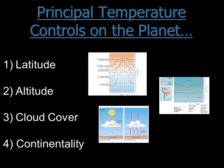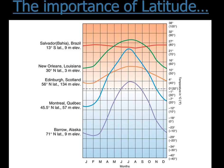So what controls the temperature on our planet? There are four things that determine it. Obviously temperature is determined by sunlight hitting the planet, but how that sunlight hits and what happens to it controls the temperature. The four factors are: first, latitude; second, altitude; third, cloud cover; and fourth, continentality.